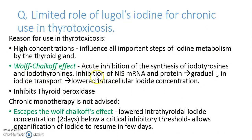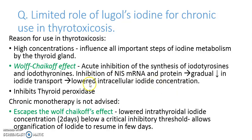This inhibition is caused by inhibiting the sodium iodide symporter (NIS) mRNA and protein. Because of inhibition of NIS, there is a gradual decrease in iodide transport, causing lower intracellular iodide concentration. Because of this lower iodide concentration, thyroid hormone synthesis is reduced. It also inhibits the thyroid peroxidase enzyme.